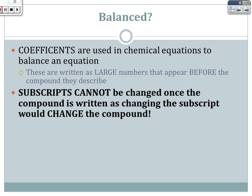The large number — the coefficient — in a chemical reaction can be changed; the subscript cannot, as that would change the compound. For example: calcium plus oxygen yields calcium oxide, or Ca + O2 → CaO. I cannot change the subscript 2 on the oxygen — oxygen is a diatomic element and is found as O2 by itself.